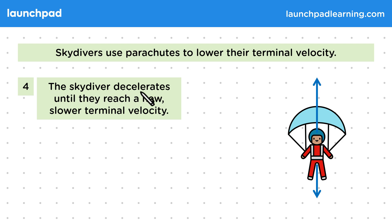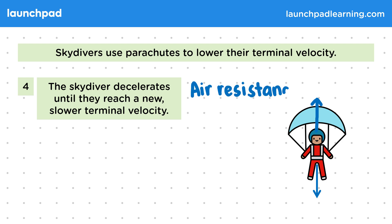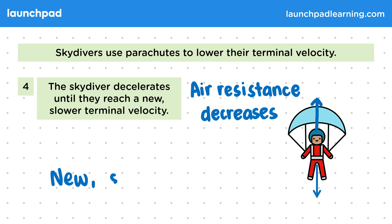In step four, the skydiver decelerates until they reach a new, slower terminal velocity. Remember, air resistance depends on how fast an object is moving, so if the skydiver is slowing down, the air resistance acting on them must be decreasing. Eventually, the skydiver will slow down to the point where air resistance equals their weight again, so there's no resultant force and they travel at a new terminal velocity — a slower speed that is safe to land at.